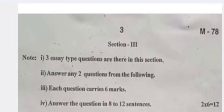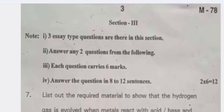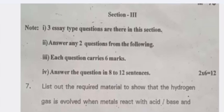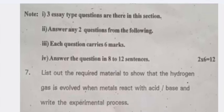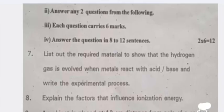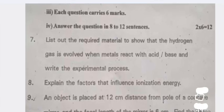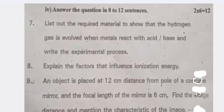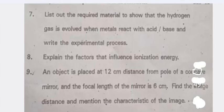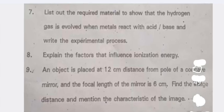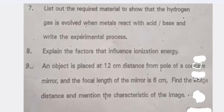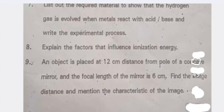Third page, Section 3: Three essay type questions are there in this section. Answer any two questions from the following. Each question carries six marks. Answer the question in eight to ten sentences. 2 × 6 = 12. Seventh one: List out the required material to show that hydrogen gas is evolved when metals react with acid or base and write the experimental process.